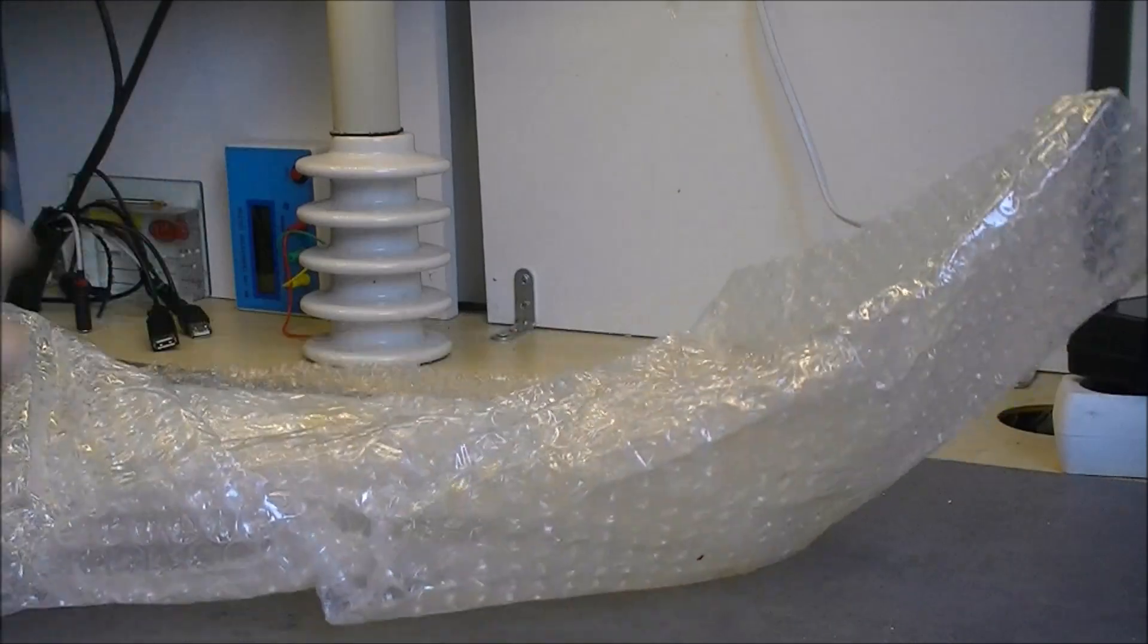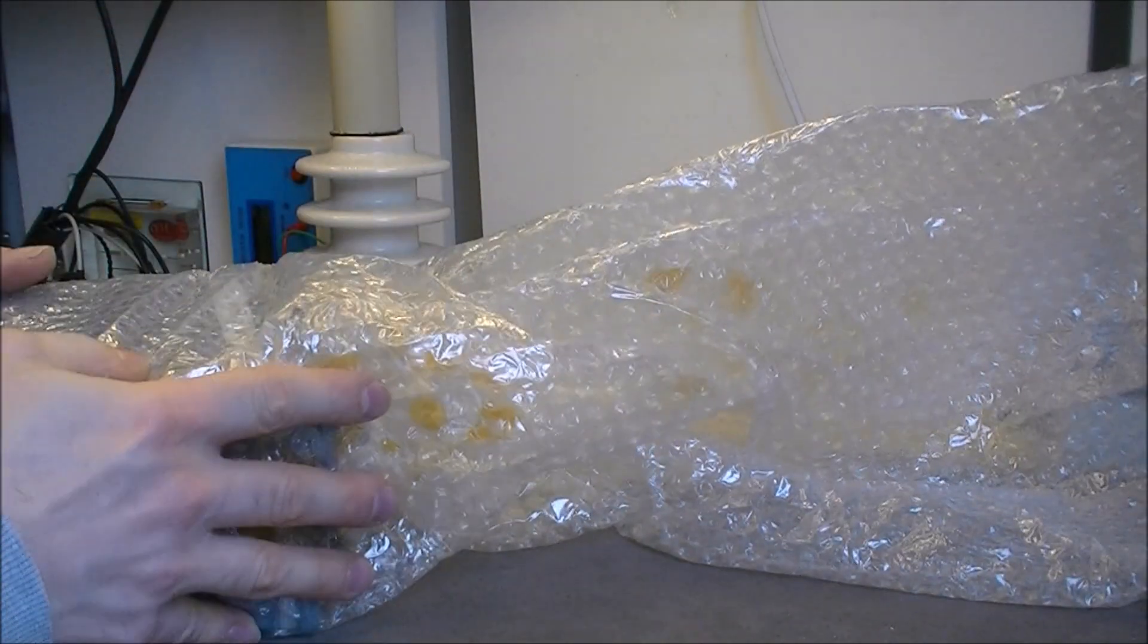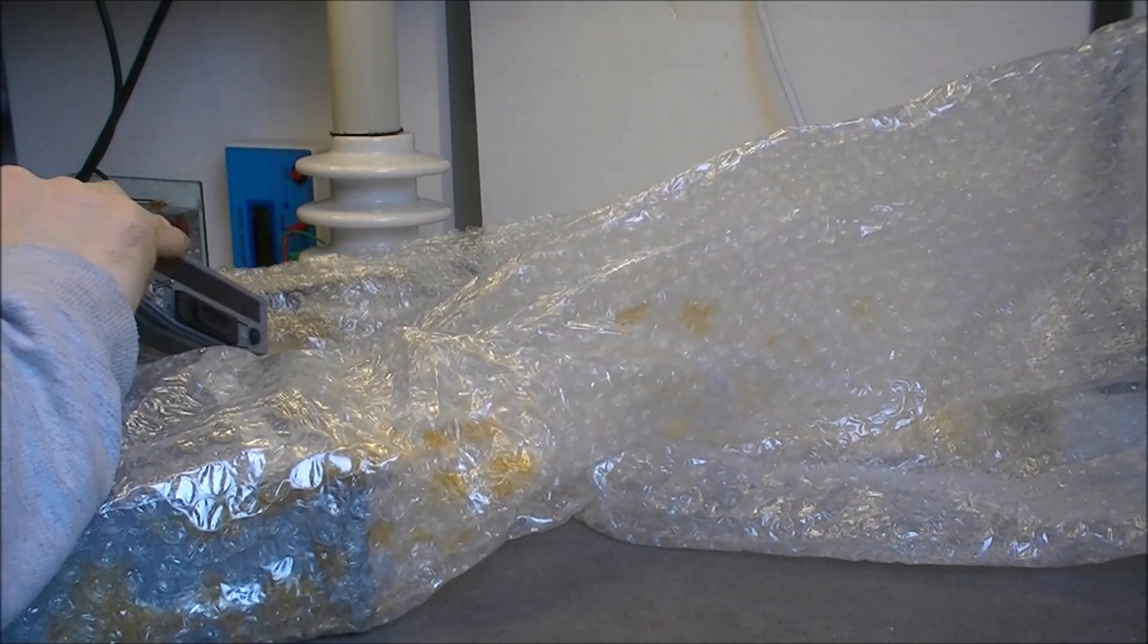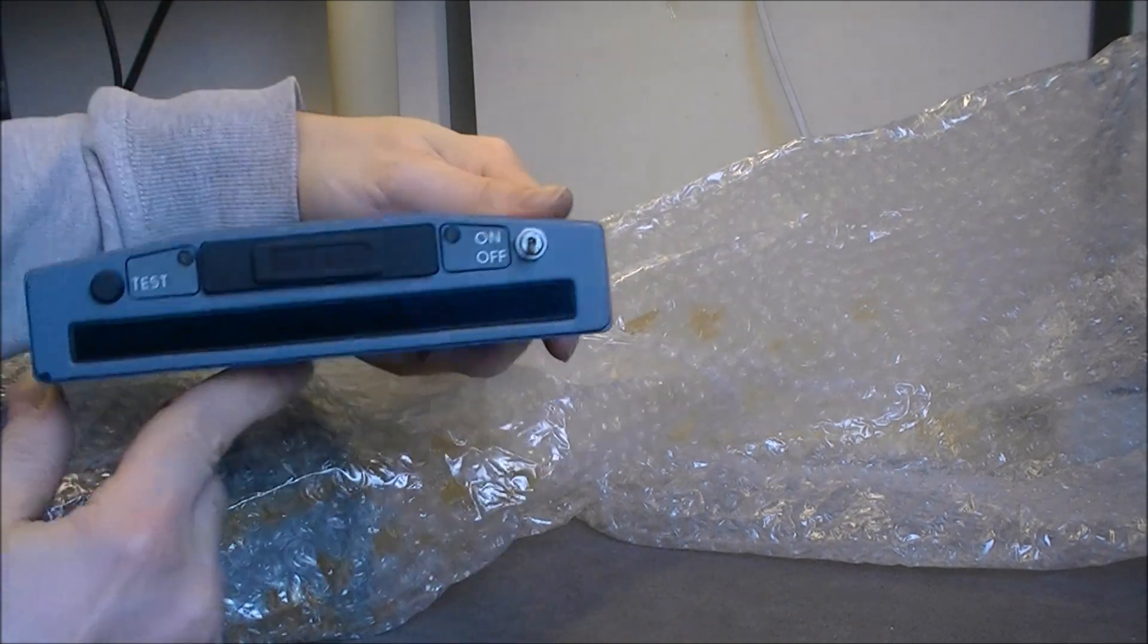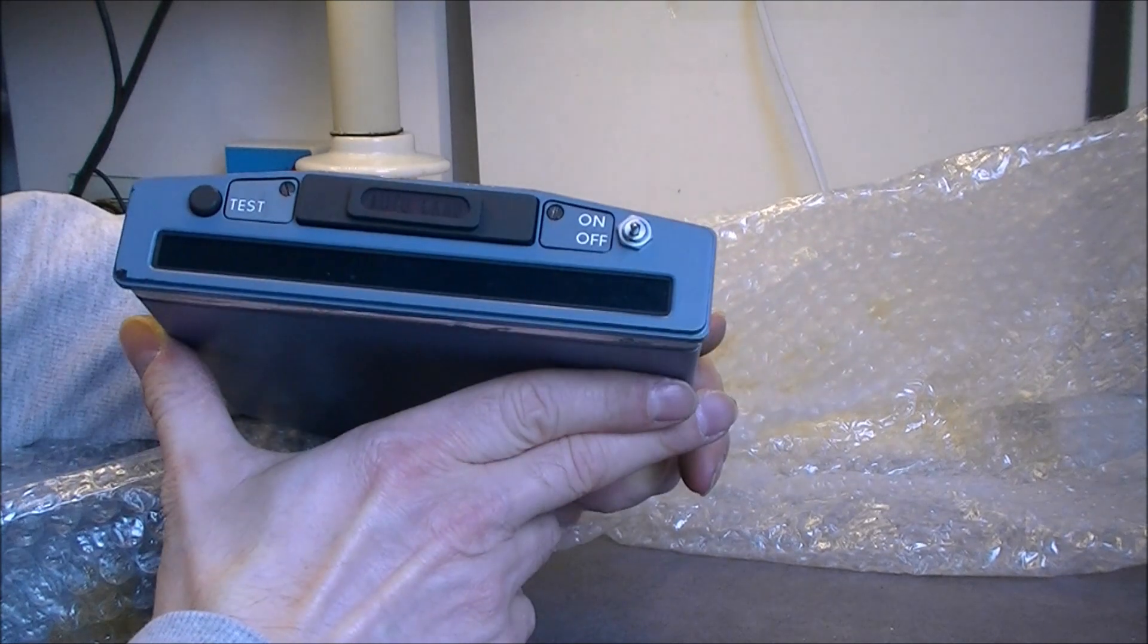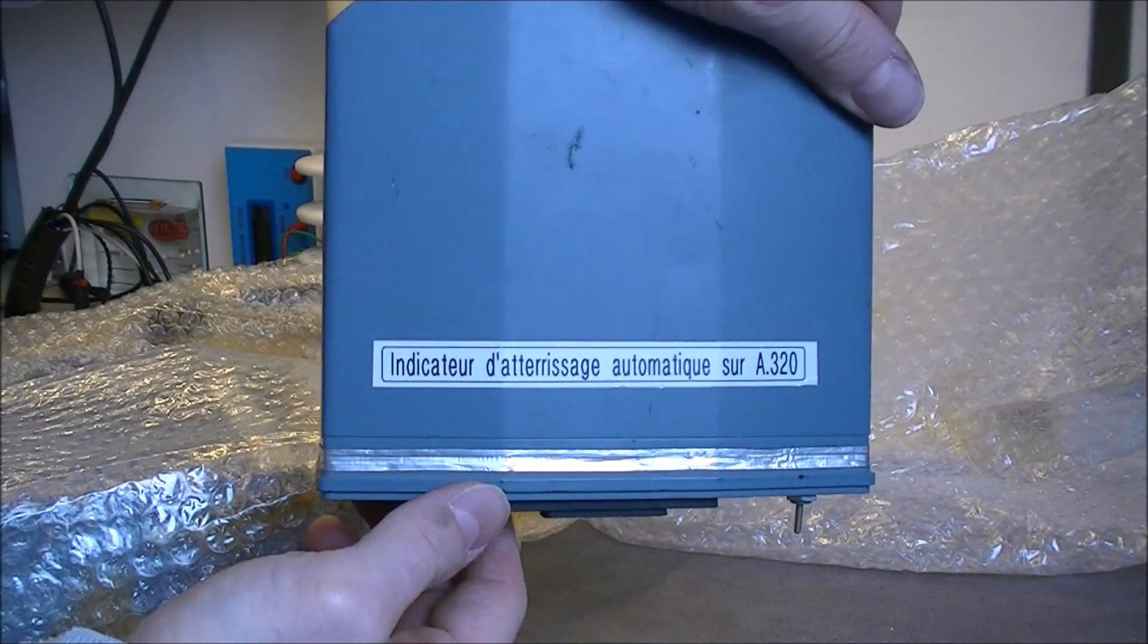So what do we have? We have a two-part eBay grab bag. Apparently, the dude wanted to get rid of some stuff. So we have an auto-landing indicator for Airbus A320, as written here in French.